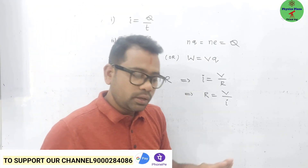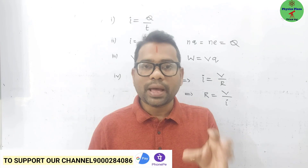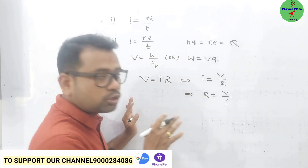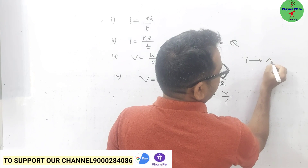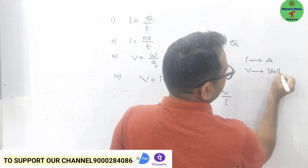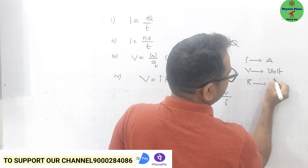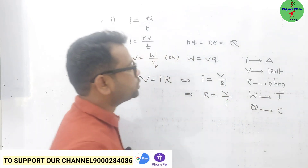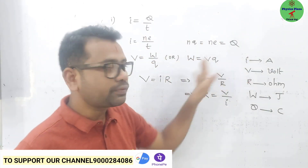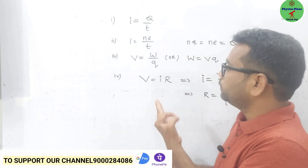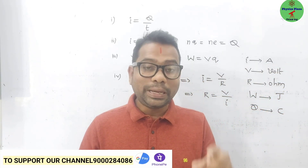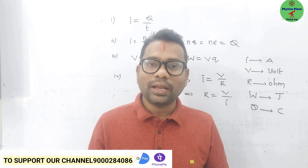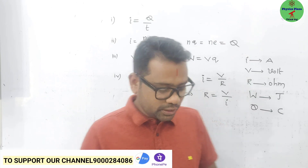Also remember the units. For current it is ampere, potential difference is volt, resistance is ohm, work done is joule, and charge is coulomb. In physics, unlike math, you have to include units with your answer. Where to use these formulas purely depends on the data given. When solving numericals, first write the data given, think about the relation between that data, then you get the formula.